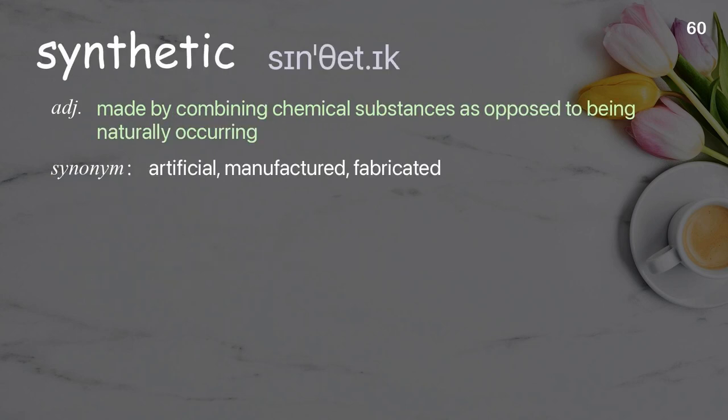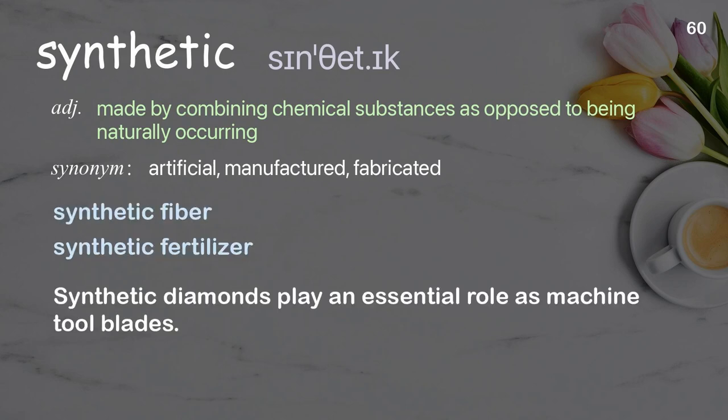Synthetic: made by combining chemical substances, as opposed to being naturally occurring. Examples: synthetic fiber, synthetic fertilizer. Synthetic diamonds play an essential role as machine tool blades.